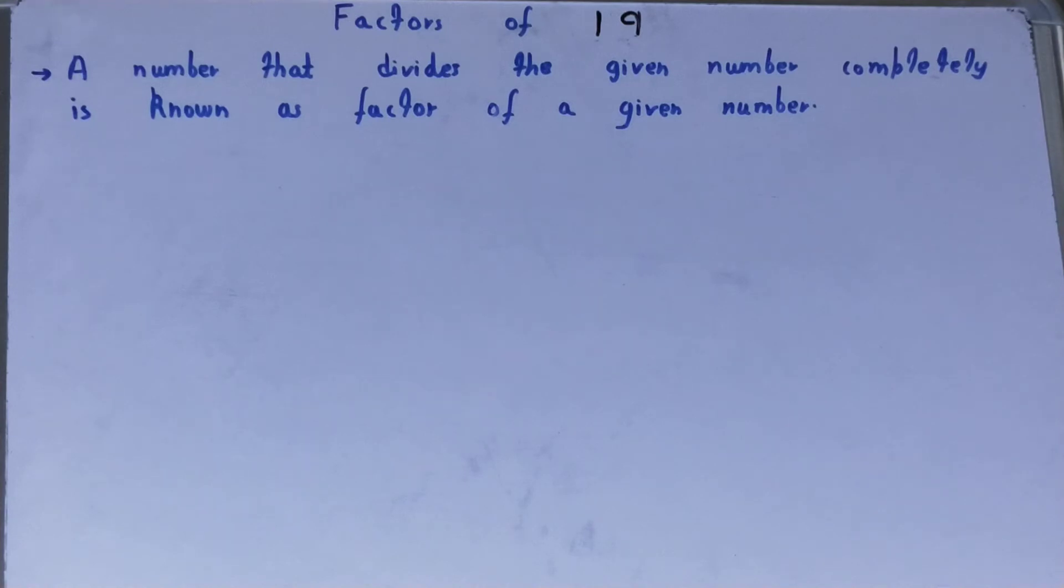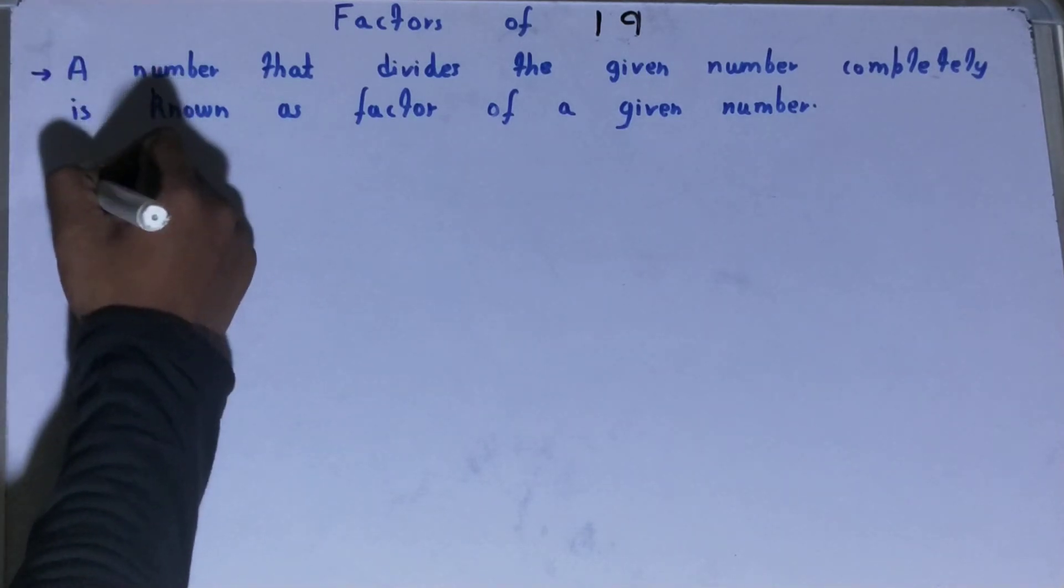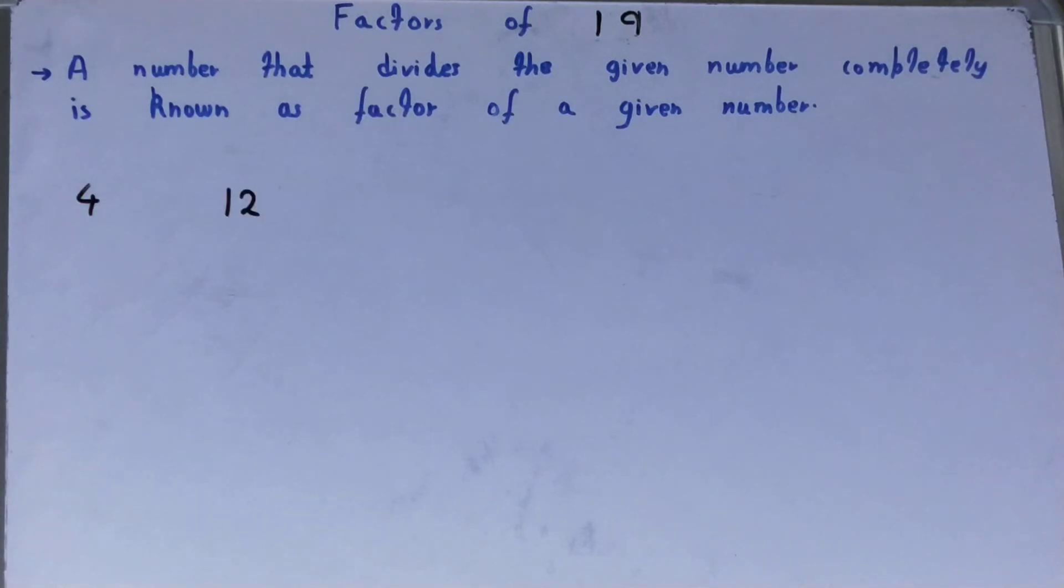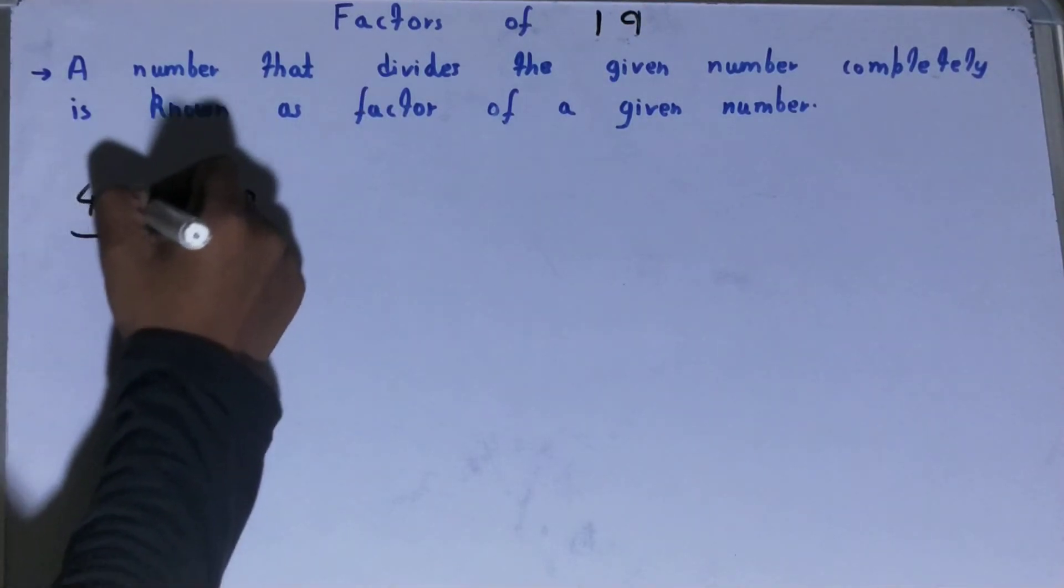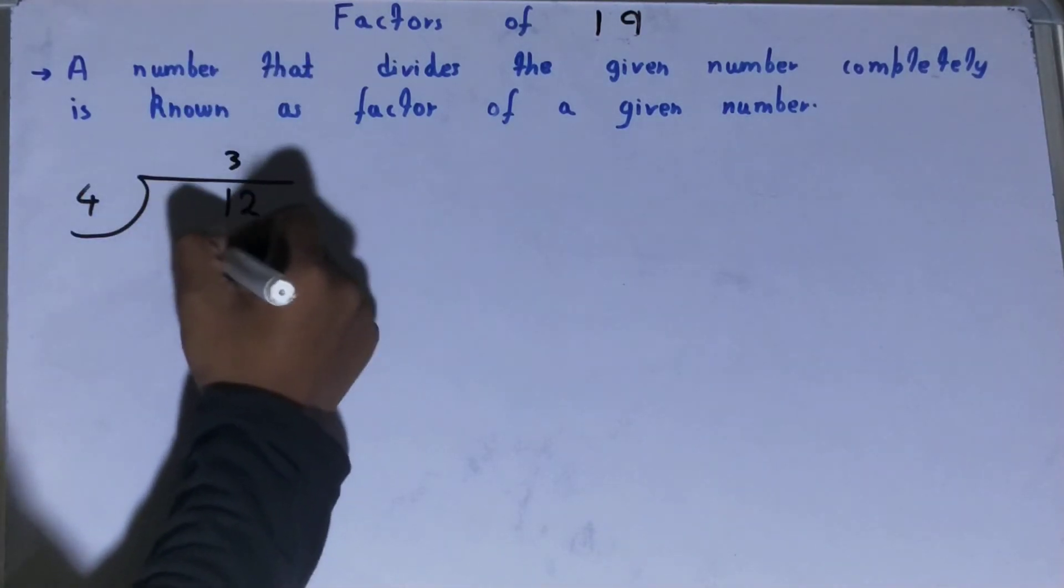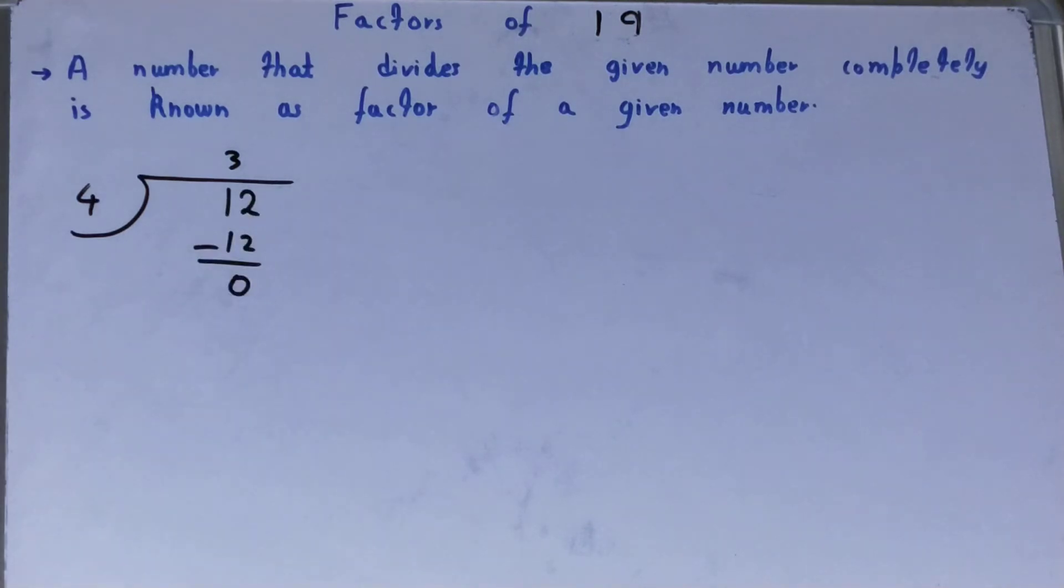Let's say you have 4 and 12. You have to check whether 4 is a factor of 12 or not. How are you going to do this? Just divide normally by keeping 4 outside and 12 inside. Do the normal division, and when you perform the division, you will get the last remainder as zero.